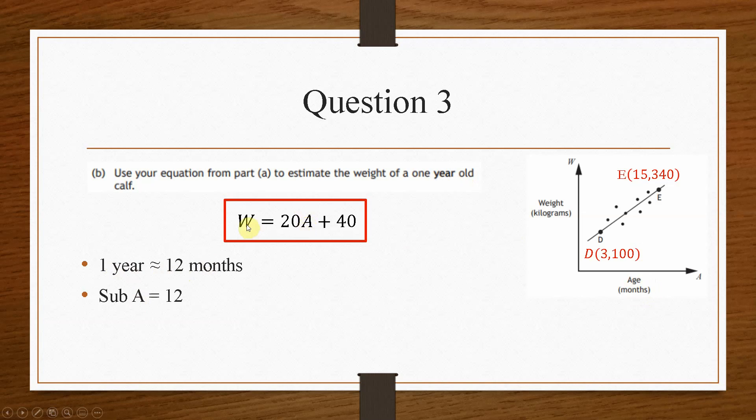And that will give us the value of W. So that will tell us the weight when A is 12 months. So we just substitute that and do the calculation and we end up with a weight of 280 kilograms.